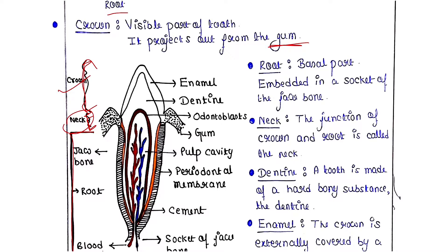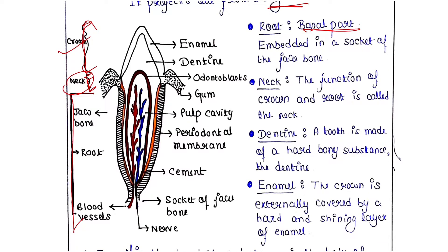The posterior part of the tooth is the root. It is the basal part, embedded in the socket of the jawbone. Here you can see the jawbone with its socket or cavities, and the root is embedded right into that socket of the jawbone.